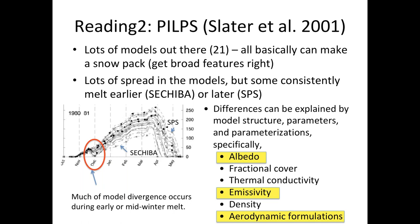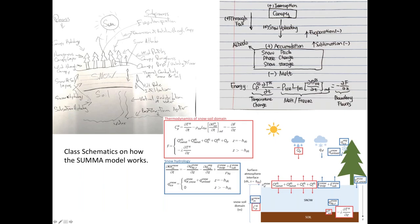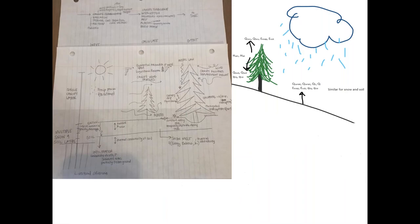It was fascinating to look at how everybody represented SUMMA. Martin Clark had about 17 different drafts of pictures to explain the model and was thrilled to have everyone in class help. Some people drew box schematics, others drew more pictorial representations — people drew trees very differently and showed different layers.